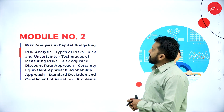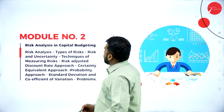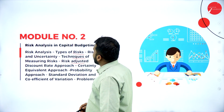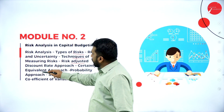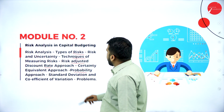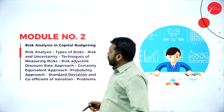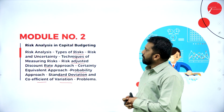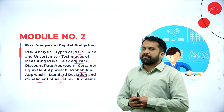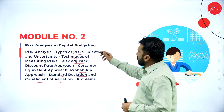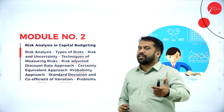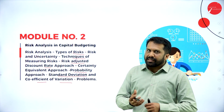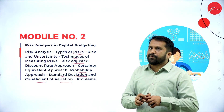Module two is risk analysis in capital budgeting, covering types of risk, techniques of risk adjustment, discount rates, probabilities, standard deviations, and coefficient of variation. Capital budgeting here is different from what you've done in basic financial management — a statistical component is included, so it involves topics from statistics as well.